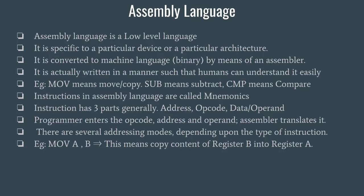For example, if you have written code for the Intel x85 series, it will not work on the x86 series of microprocessors. Anything written in assembly language is first converted into machine language — binary language — and that is done by an assembler. An assembler is a program that translates your instructions written in assembly language into binary language. The instructions you write in assembly language are called mnemonics, and they generally have three parts: the address, the opcode, and the data.